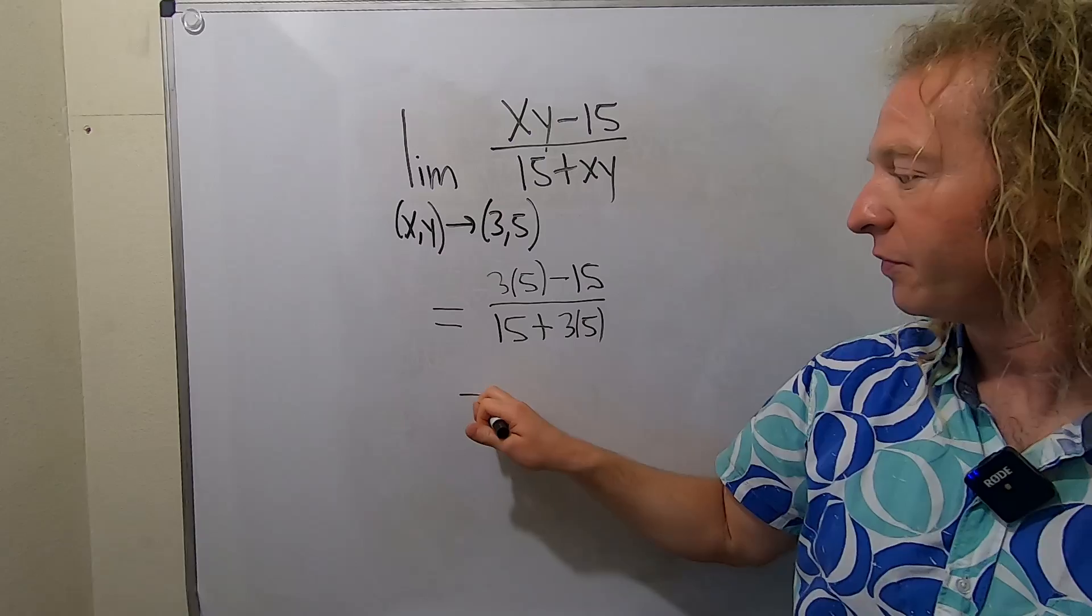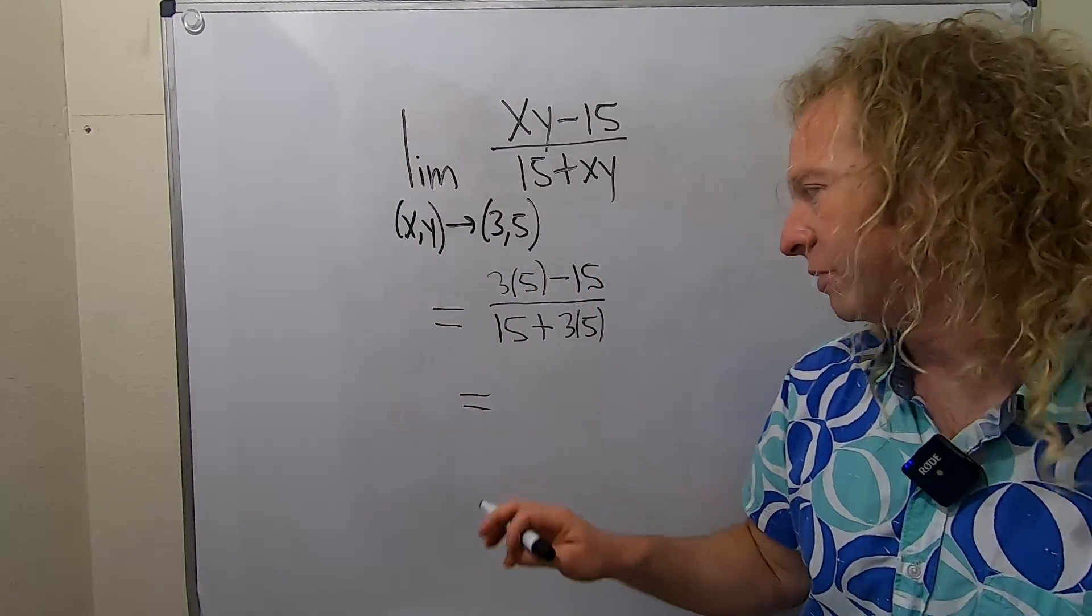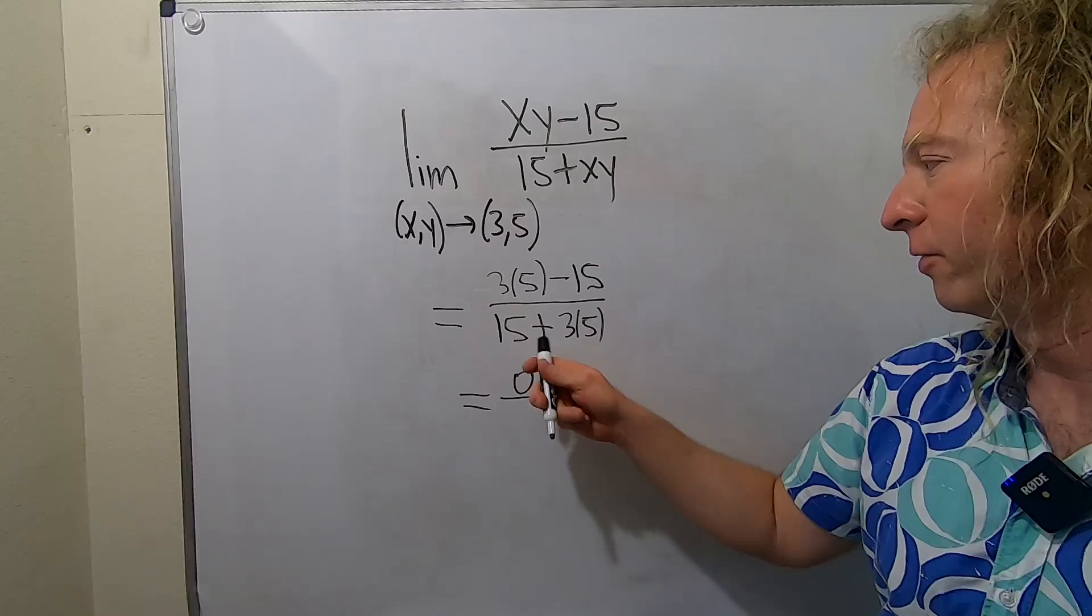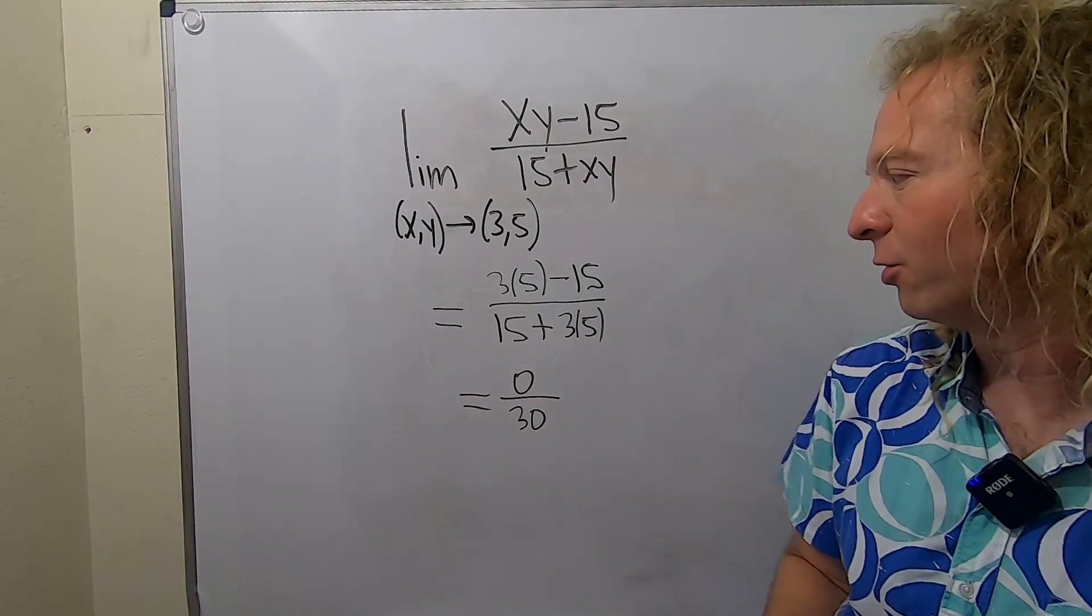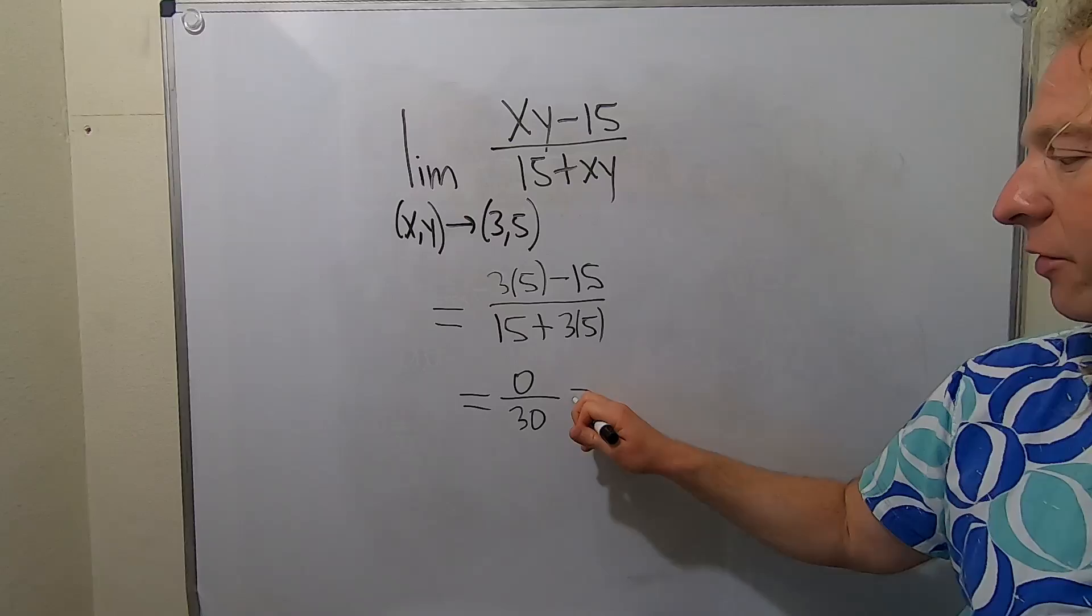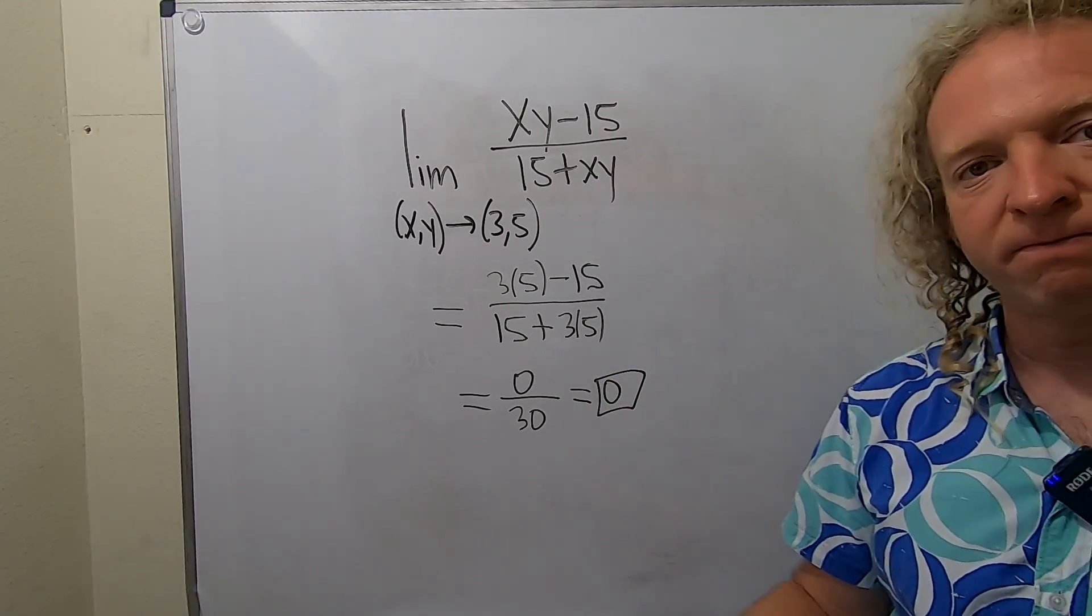This is equal to, so 15 minus 15 is 0, so this is 0 over 15 plus 15 is 30, so 0 over 30. But 0 over 30 is simply 0, so this limit is equal to 0. That's it.